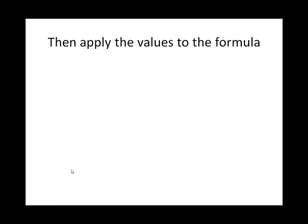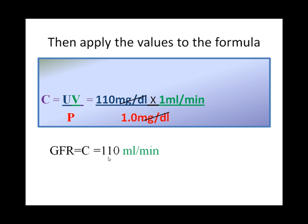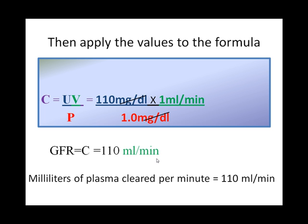Then I apply the values to the formula. You can remember the formula: C equals UV divided by P. Write the formula first, then apply your figures with units clearly. Cancel the same units, and you can get the result in ml per minute. This is the unit for clearance. The glomerular filtration rate or clearance equals 110 ml per minute.